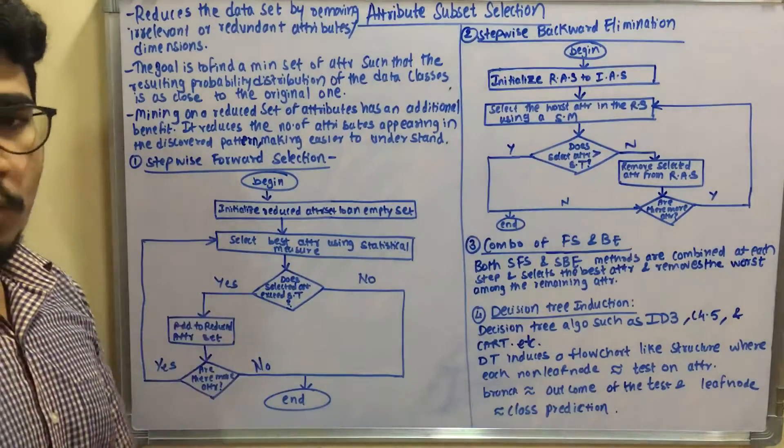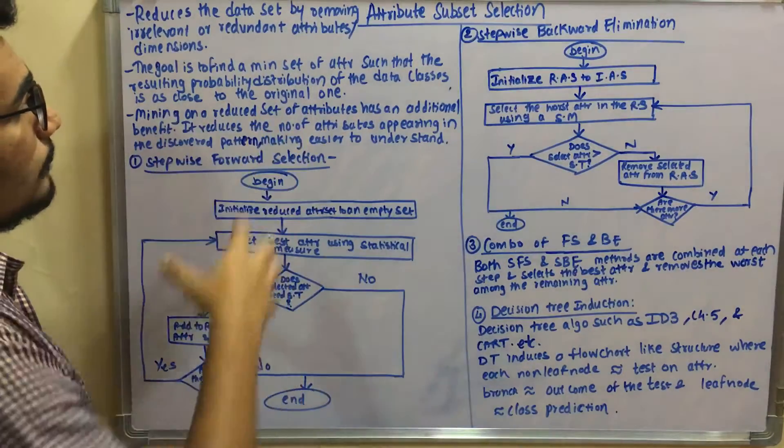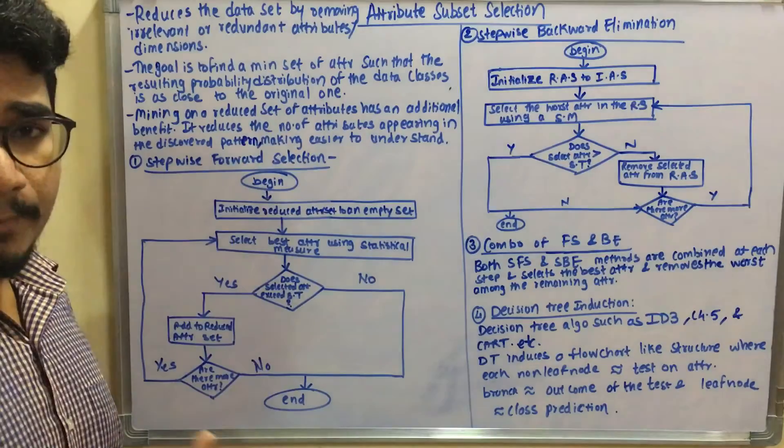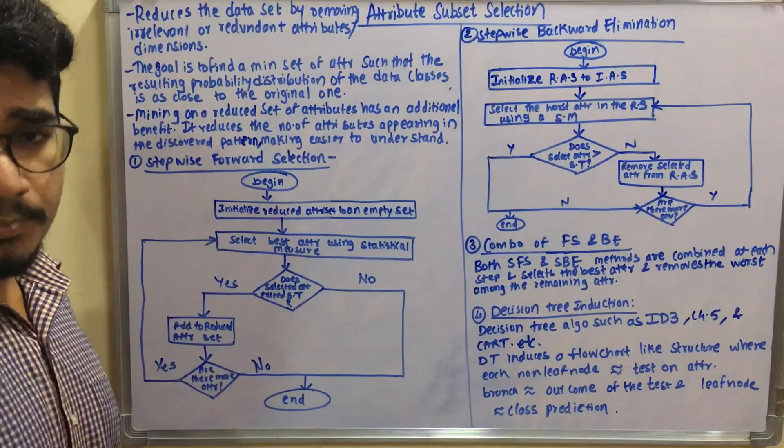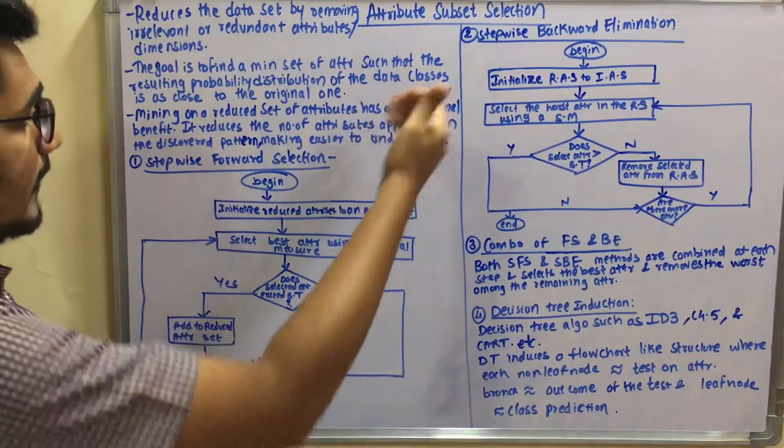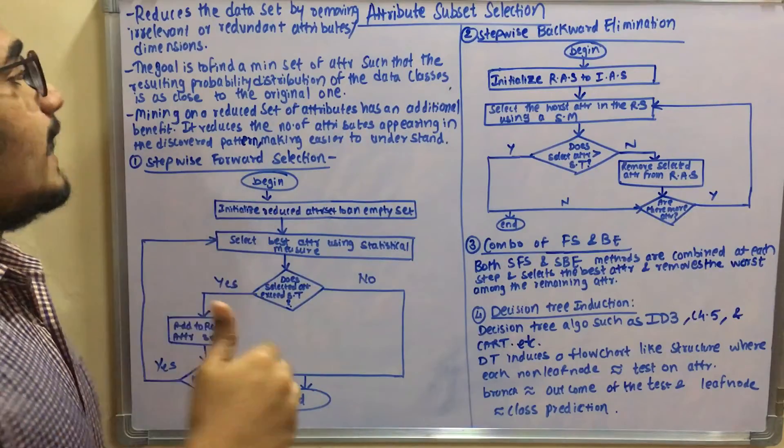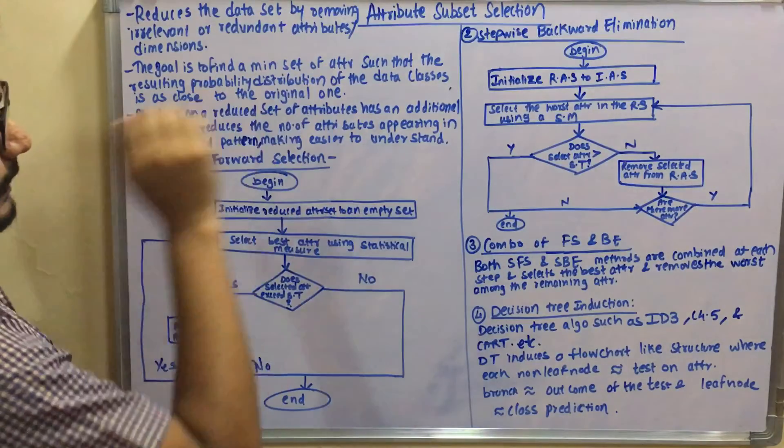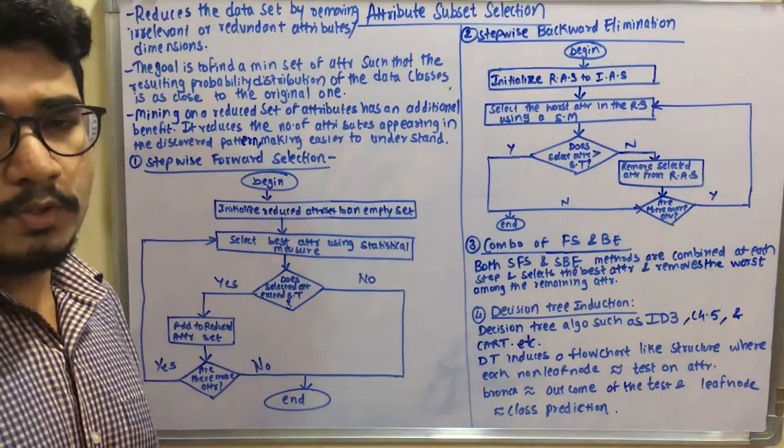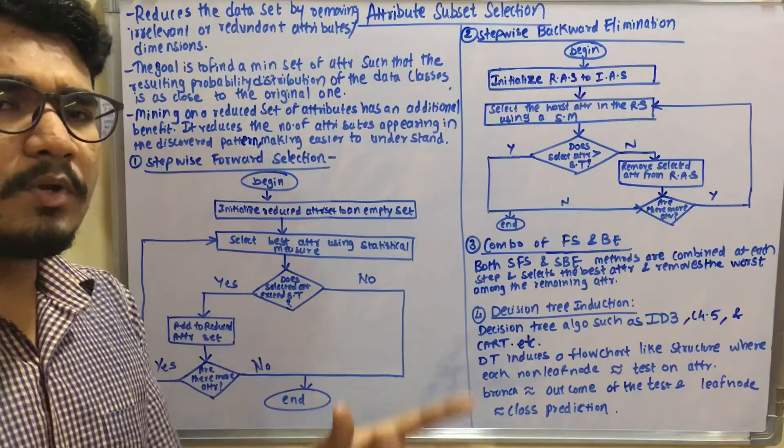The main goal of attribute subset selection is to find a minimum set of attributes such that the resulting probability distribution of the data classes is as close as to the original one with many different attributes. This means the original dataset will have n number of different attributes - 50 or 100 attributes.